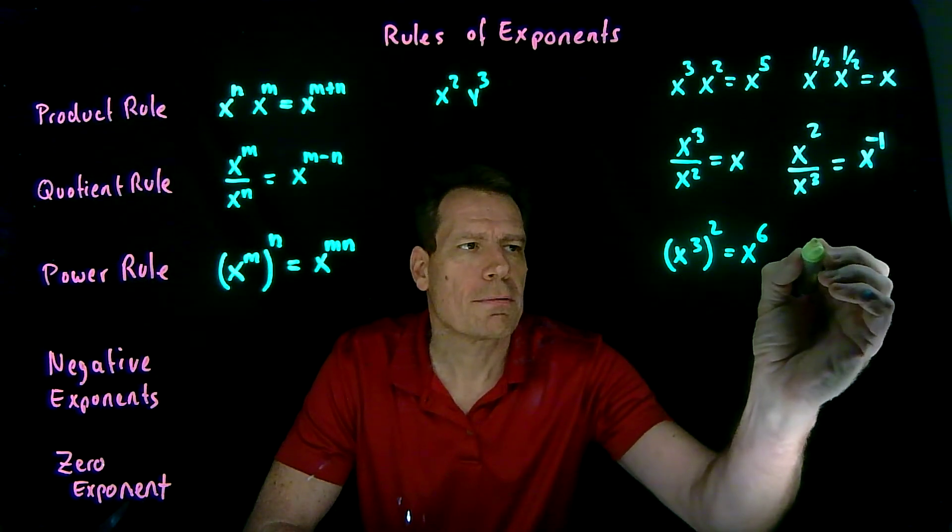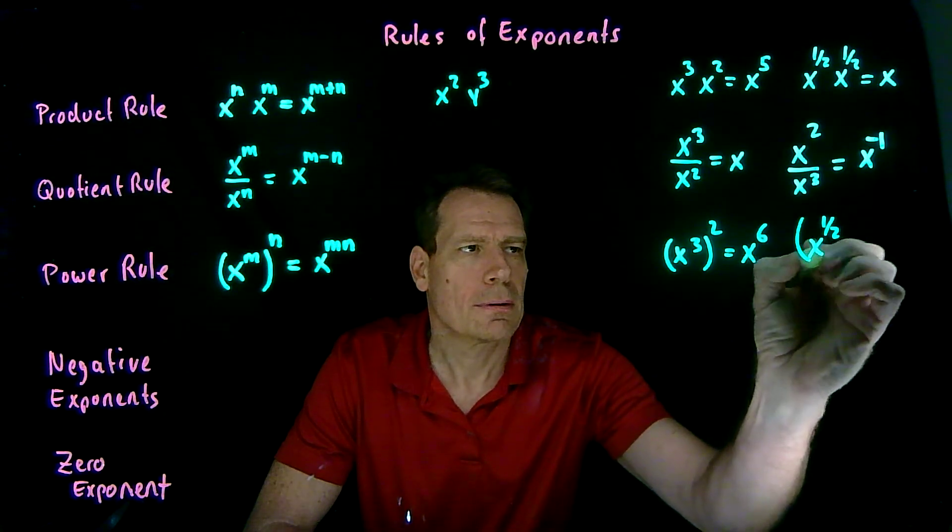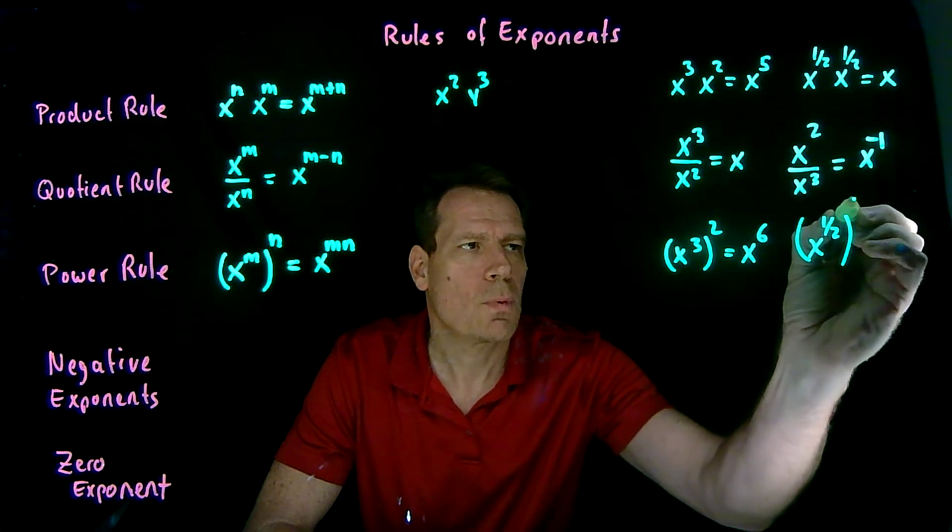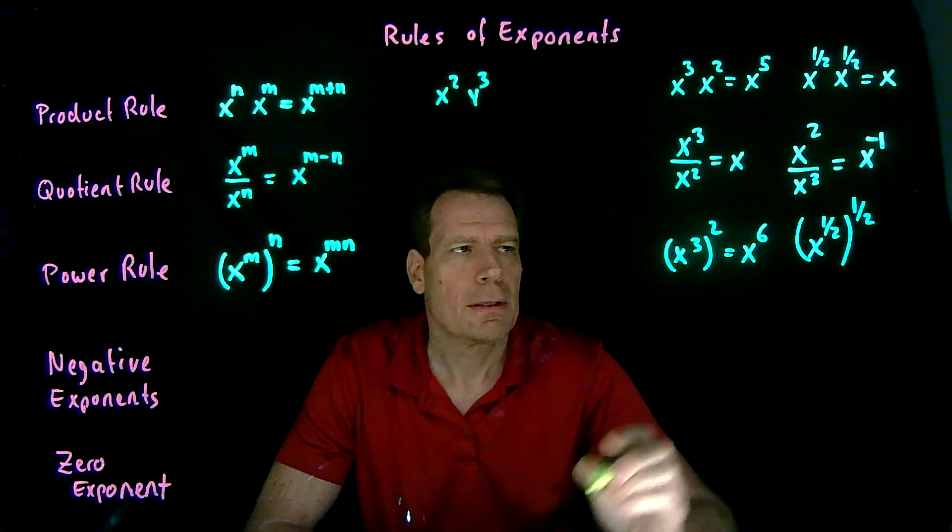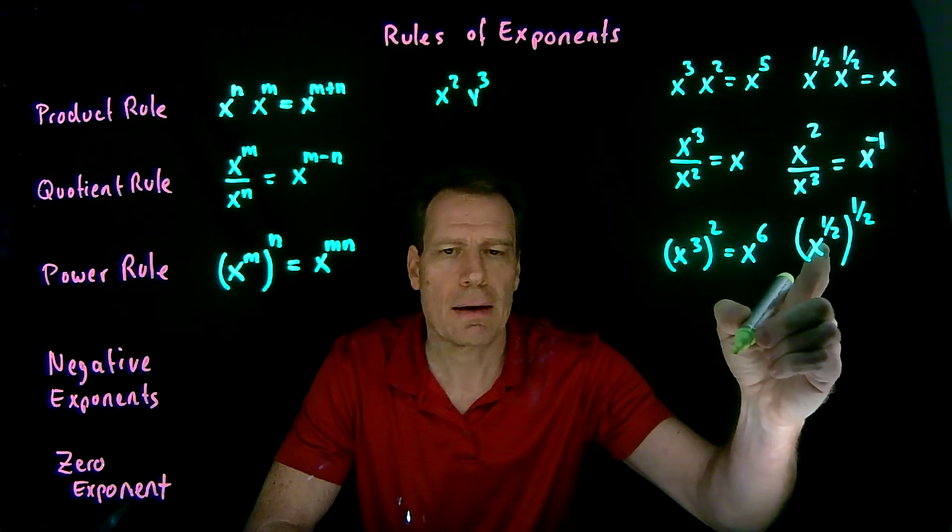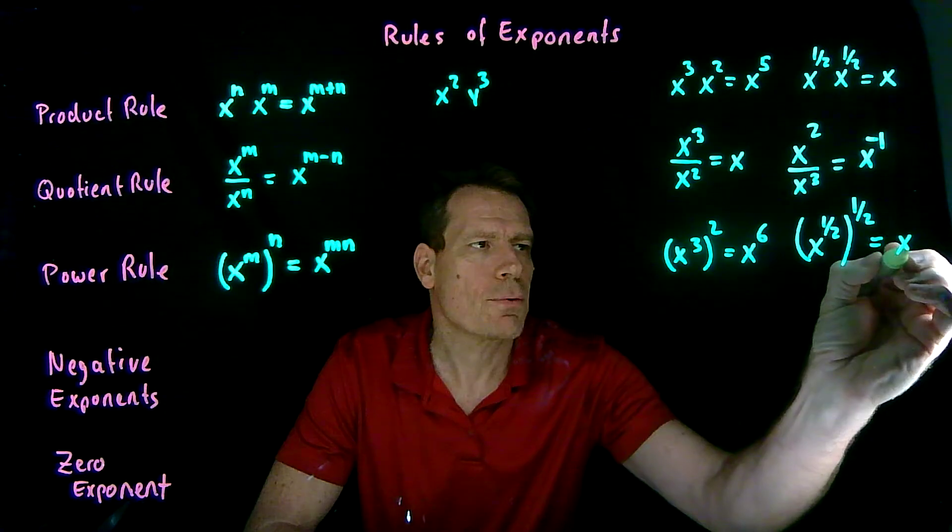Or if we have x to the 1 half taken to the 1 half, then we multiply 1 half times 1 half, which is 1 fourth.